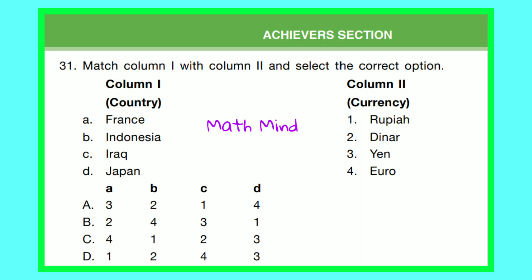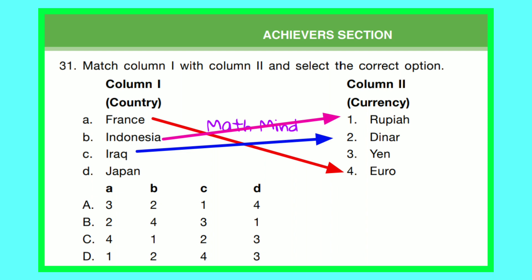Achiever's Section. Question No. 31. Match Column 1 (Country) with Column 2 (Currency) and select the correct option. A — France: Euro. B — Indonesia: Rupiah. C — Iraq: Dinar. D — Japan: Yen. So Option C is correct.